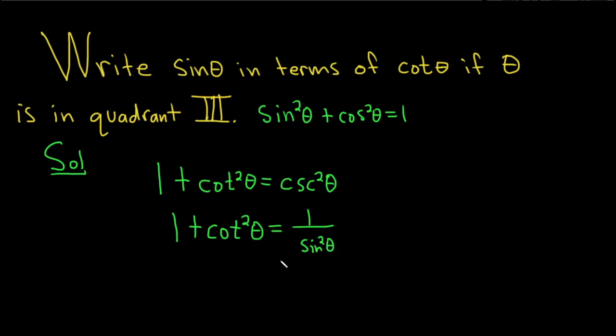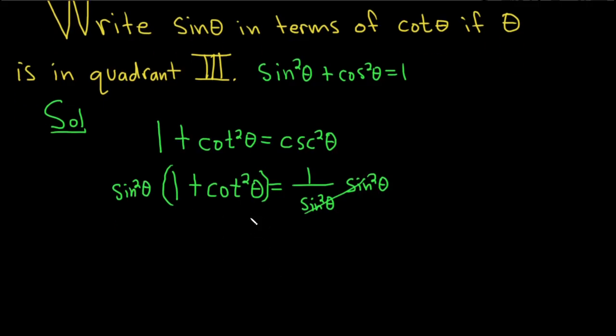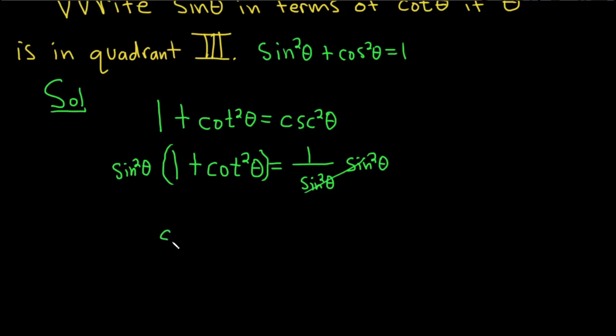Now let's solve for sine. We have sin²θ on the bottom, so let's multiply both sides by sin²θ to get rid of it. What you do to one side, you do to the other. So we have sin²θ(1 + cot²θ) = 1.